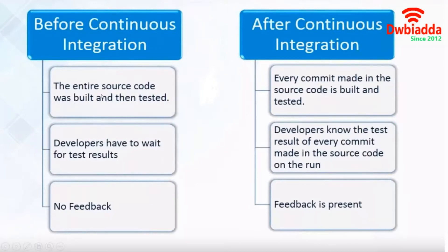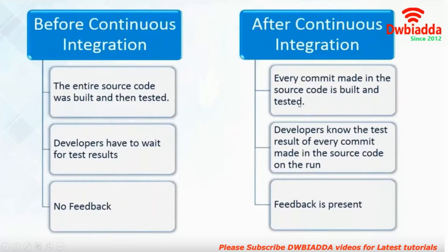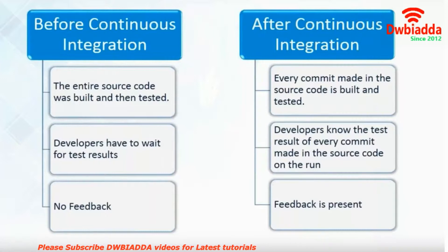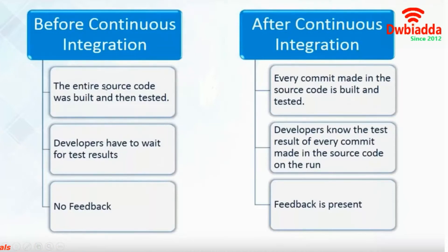Before continuous integration, the entire source code was built with all features and then tested all at once. After continuous integration, every commit made by the developer is built and tested on the fly. If a commit doesn't go right, we can pull back the changes at that moment only, without having to rebuild the entire source code again and again.